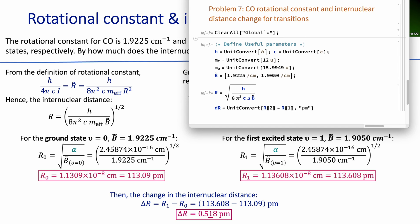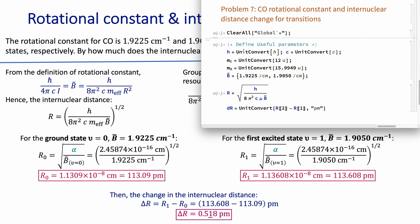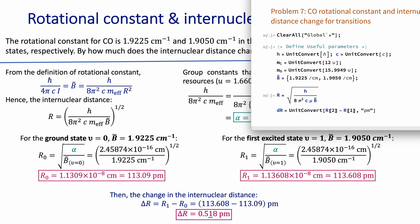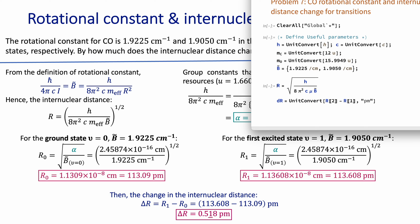Now I'm going to show another way to solve this problem in Mathematica. The first thing to do is define all the useful parameters: Planck's constant, the speed of light, the mass of carbon, and the mass of oxygen given in atomic mass units. I'm defining the rotational constants as an array — the first for the ground vibrational state and the second for the first excited vibrational state.